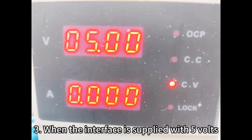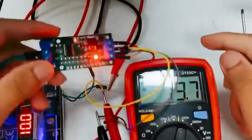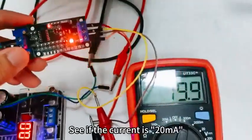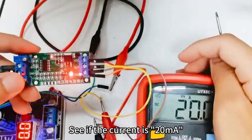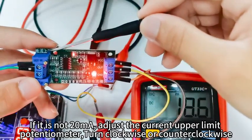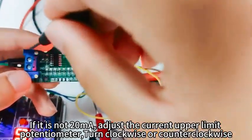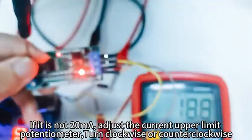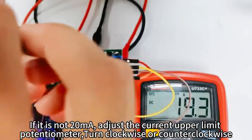Step 3: When the interface is supplied with 5V, see if the current is 20mA. If it is not 20mA, adjust the current upper limit potentiometer, turn clockwise or counterclockwise.